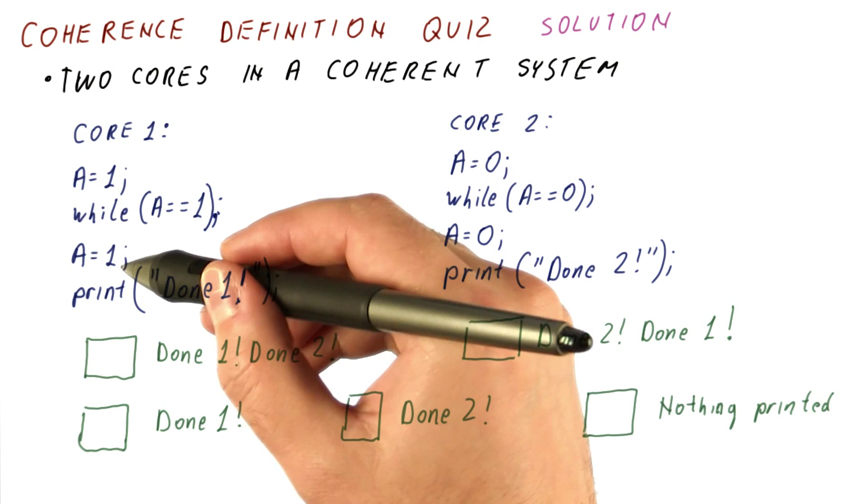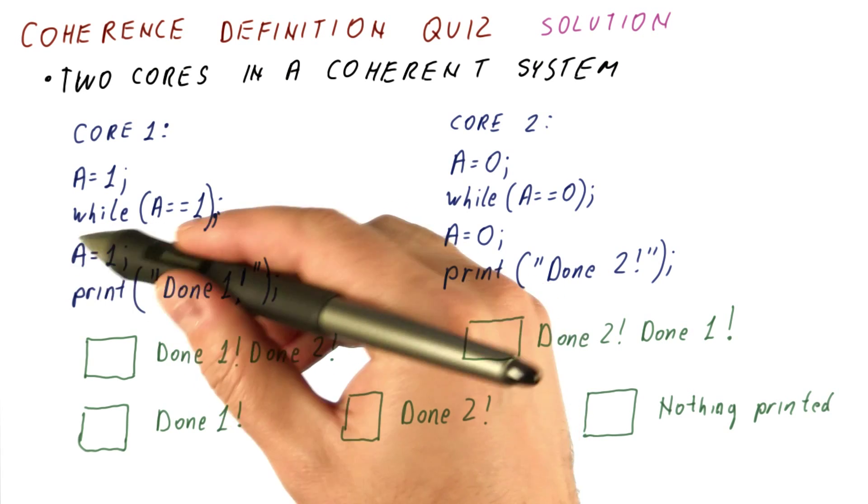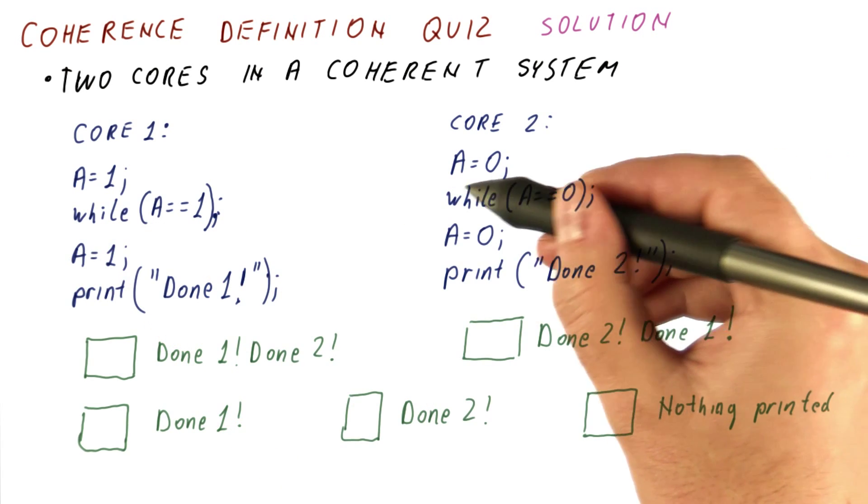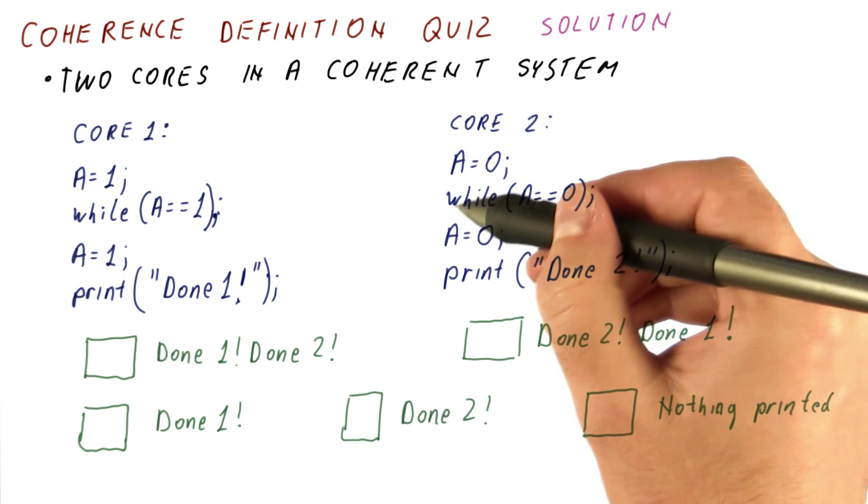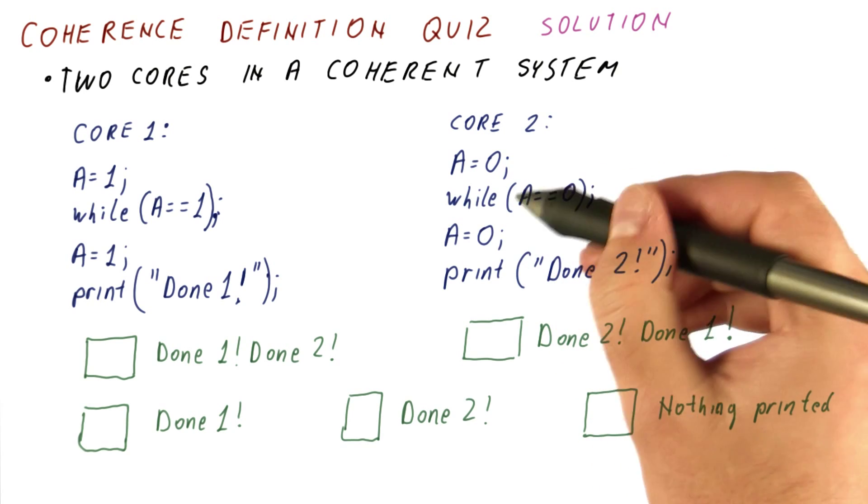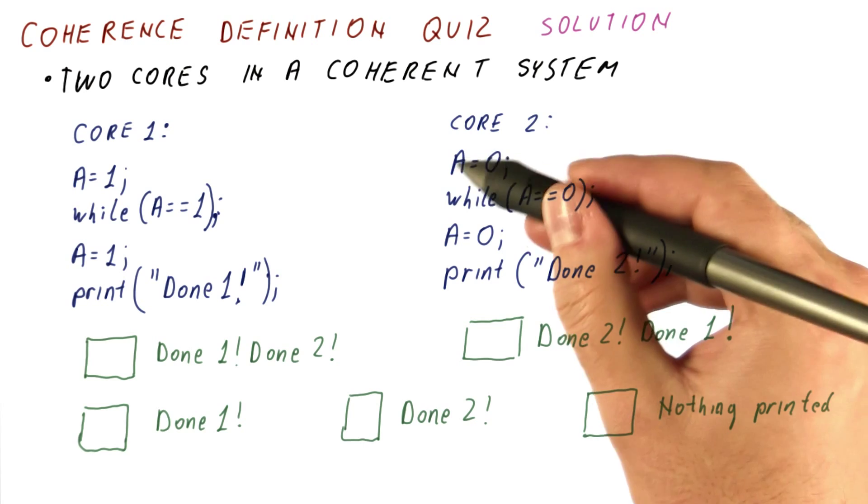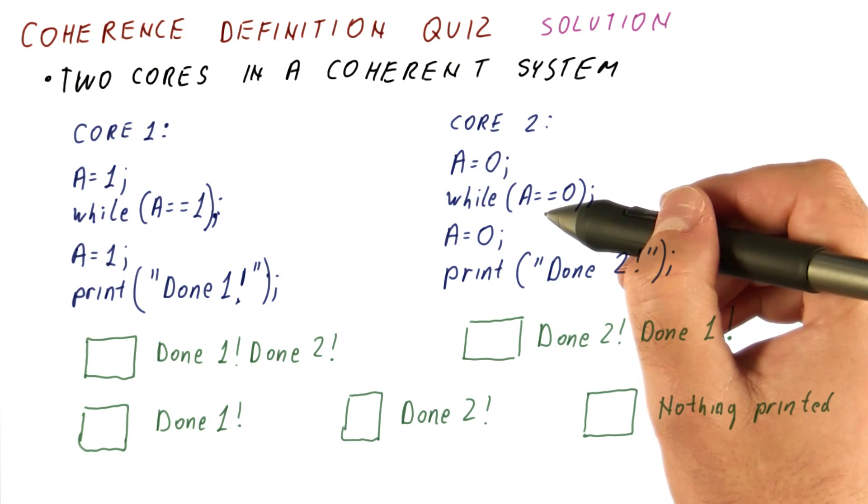And now core one will set A to one. Core two will wait here until A is set to one, because as long as it's set to zero the way it set it, it's going to get stuck here.